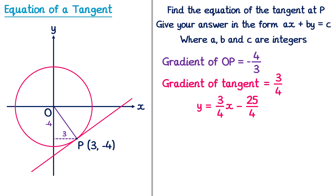However this isn't the answer to the question, because it did say to give it in the form AX plus BY equals C, where A, B and C are integers. In order to write it in this form I'm going to first multiply both sides by 4, since my fractions have 4 as their denominator. Multiplying the left side by 4 gives 4Y. On the right hand side, 3 quarters multiplied by 4 is just 3, so the 4s cancel and I have 3X. Negative 25 over 4 multiplied by 4 — the 4s cancel — so it's negative 25.